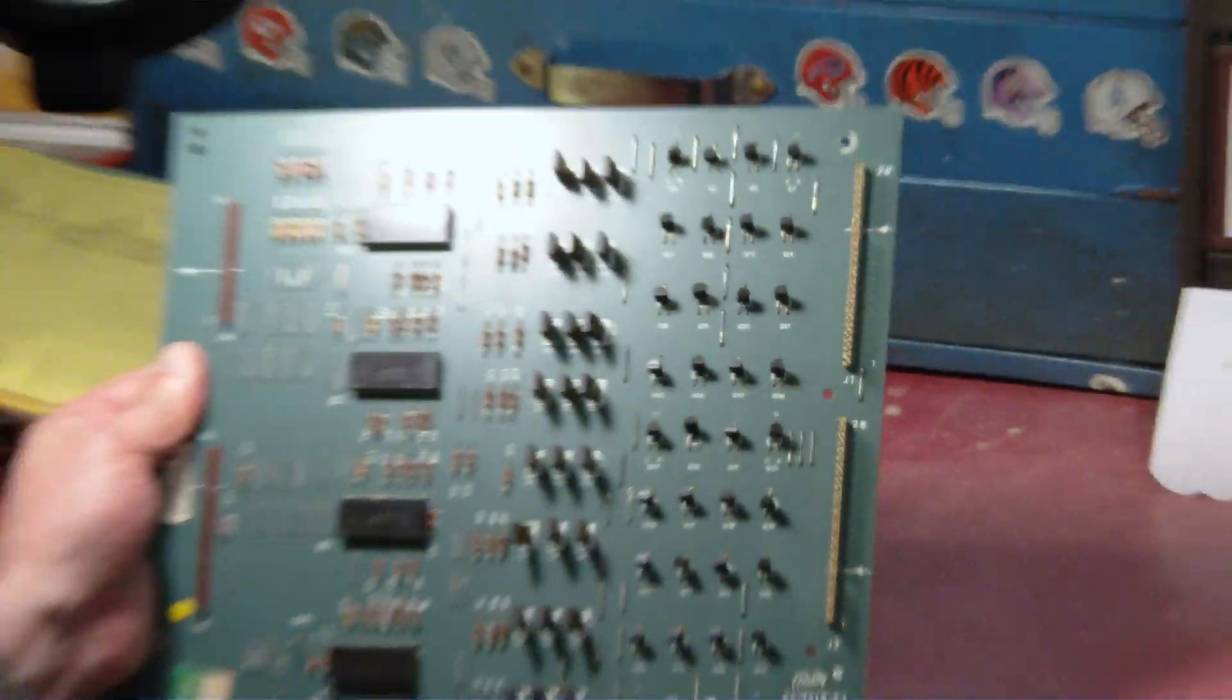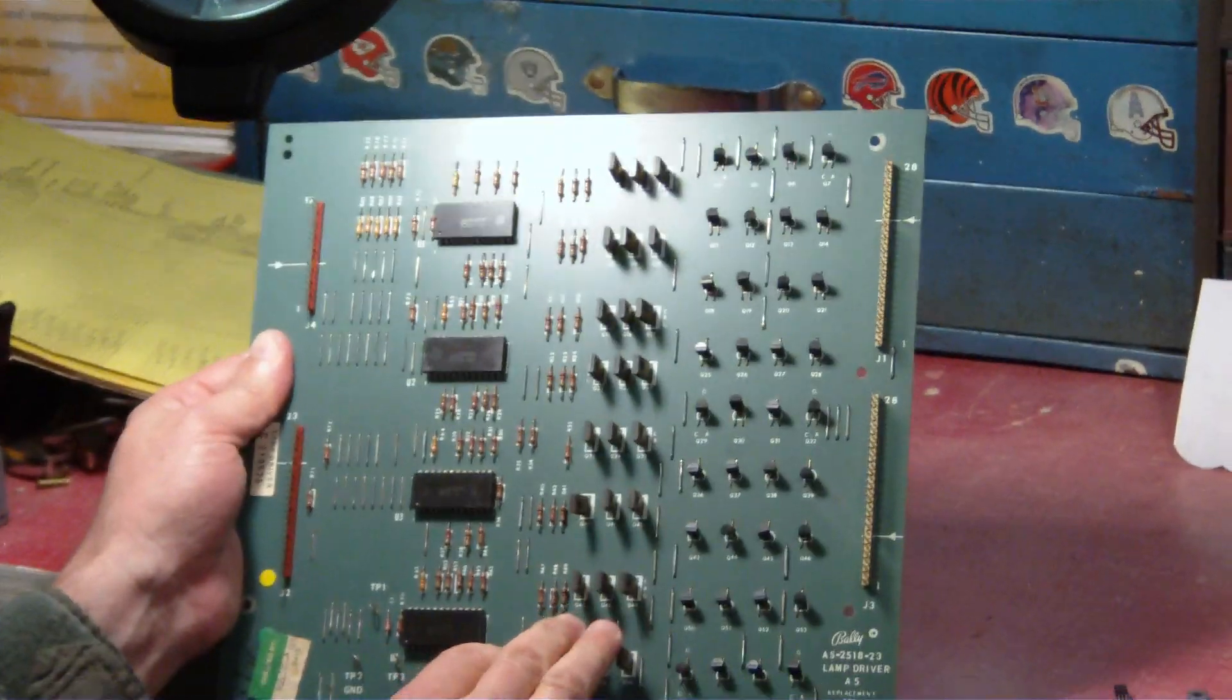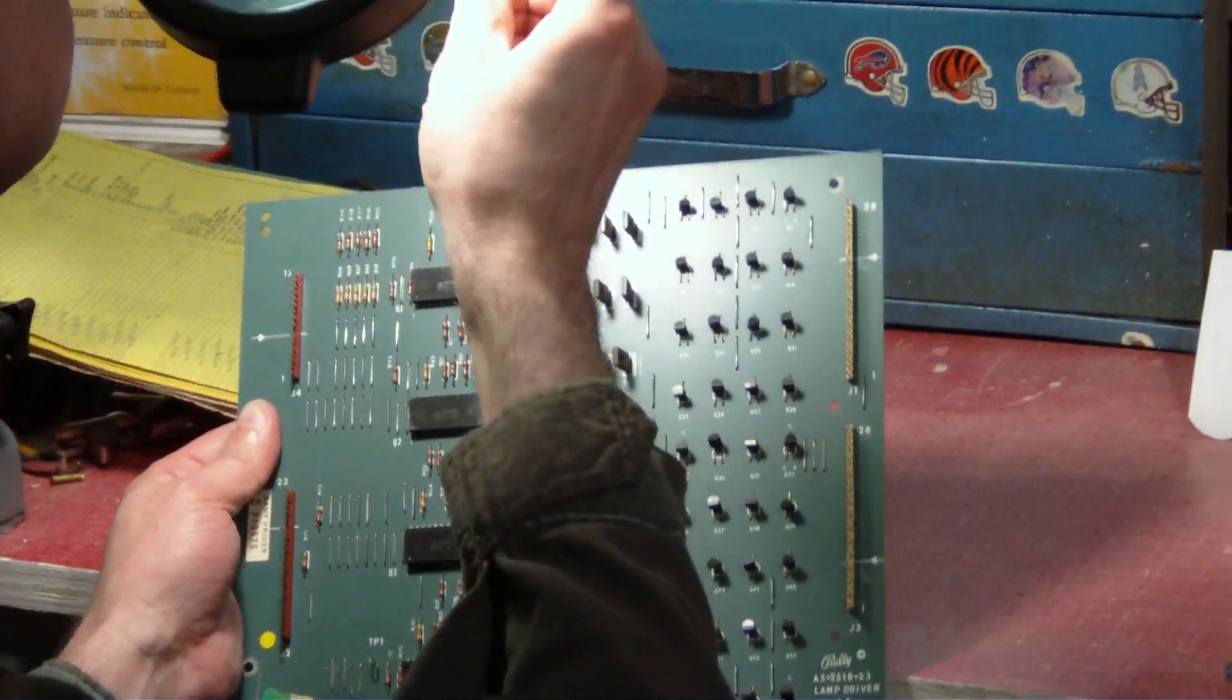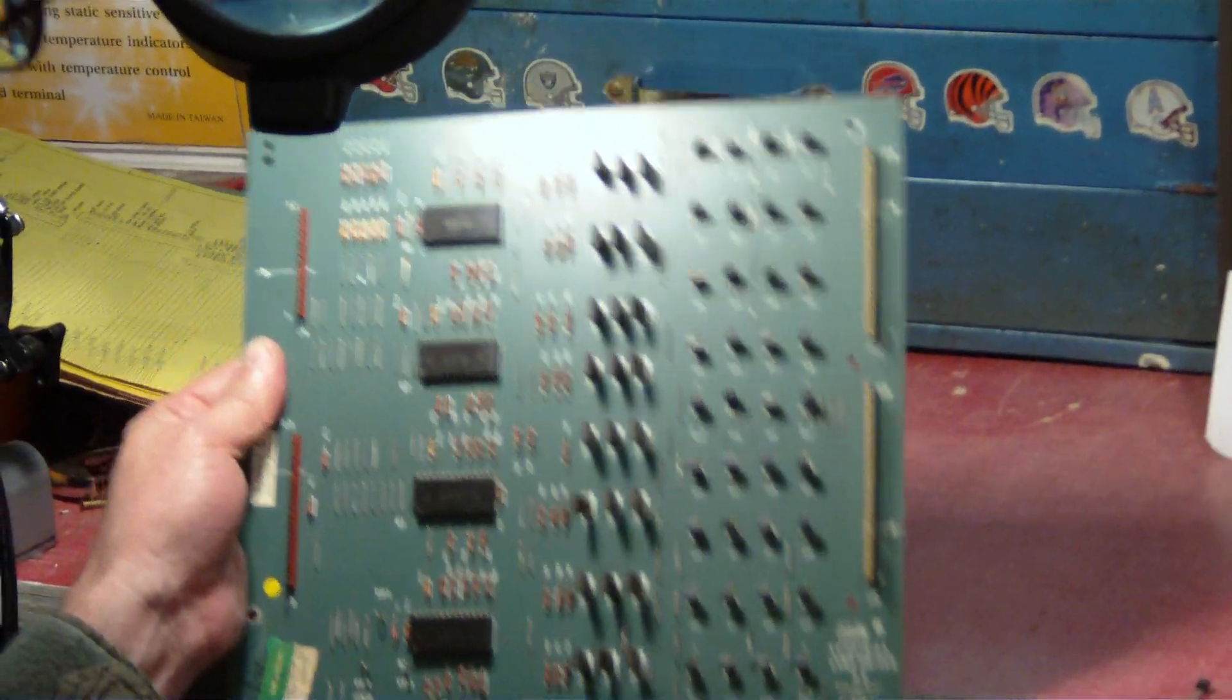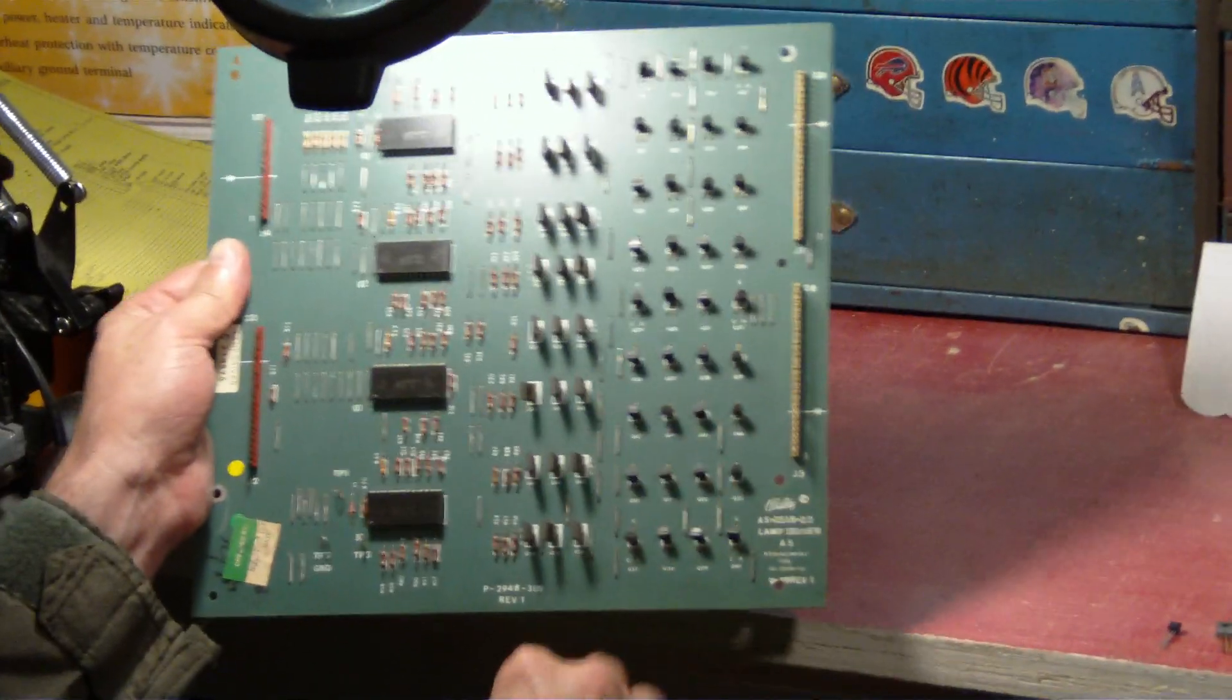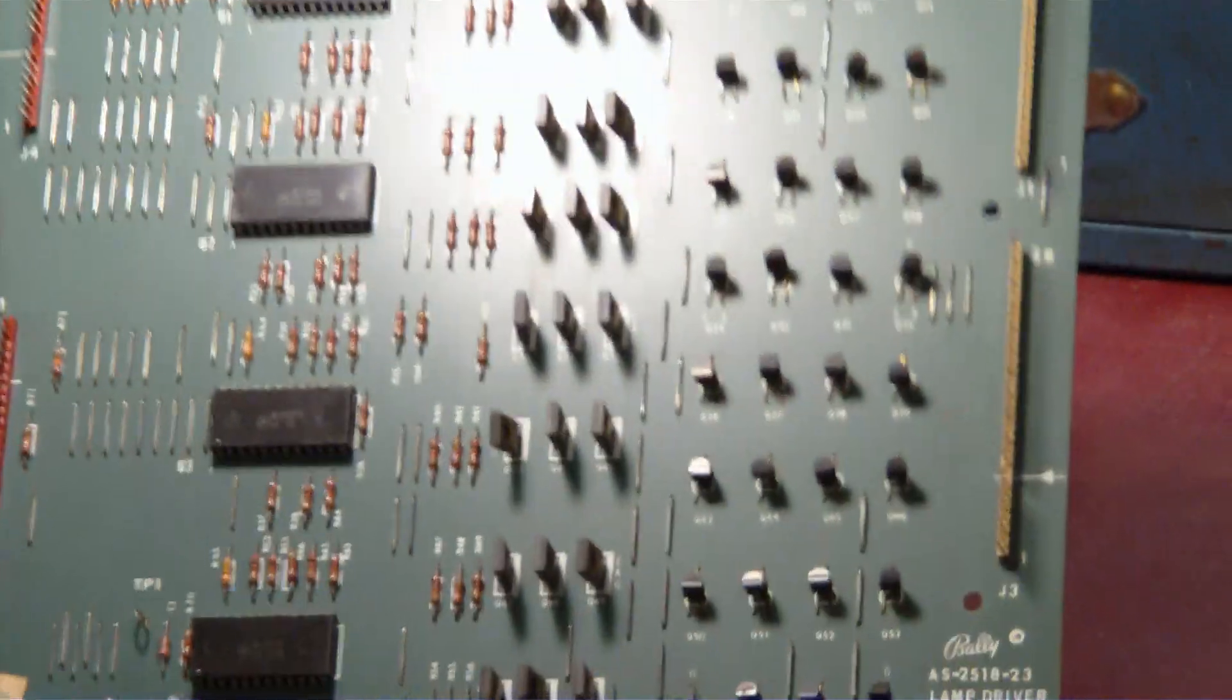Now your transistors come in two flavors. There's MCR106s and TIP5060s. And in this particular case this board has one of each that's bad. The 57 which is there and then 49 which is right there.